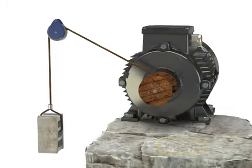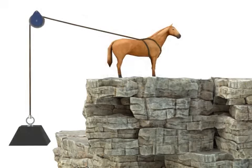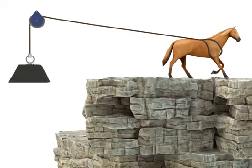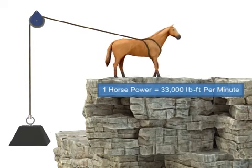Horsepower is defined as the rate at which work is accomplished. Years ago, before motors were invented, most work was accomplished manually. It was estimated that one horse could accomplish approximately 33,000 pound-foot of work per minute, and thus the term horsepower was born.